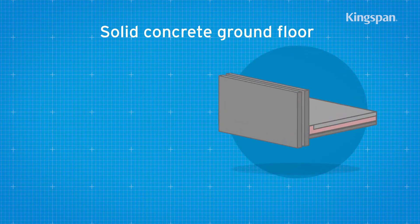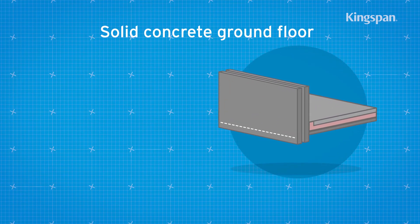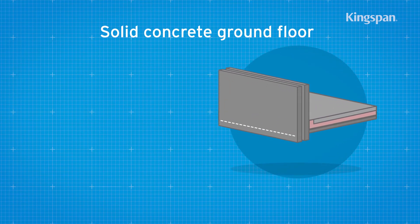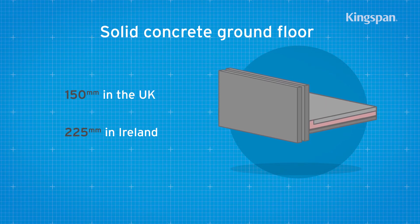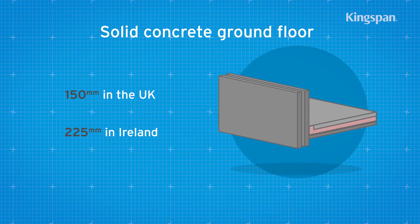For solid concrete floors, wall ties start at either one course of block work below the damp proof course or, depending on your location, a specified distance below the top surface of the ground floor perimeter insulation upstand.